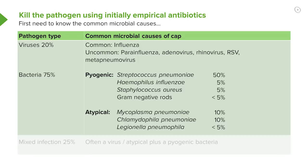Those bacteria can be divided into two categories. The pyogenic bacteria cause a high inflammatory response and focal consolidation — generally the ones that cause more acute and severe disease. That's mainly Streptococcus pneumoniae, which is responsible for about half of all community-acquired pneumonia cases. Other bacteria include Haemophilus influenzae and Staphylococcus aureus. Fortunately, gram-negative pneumonia is relatively rare.